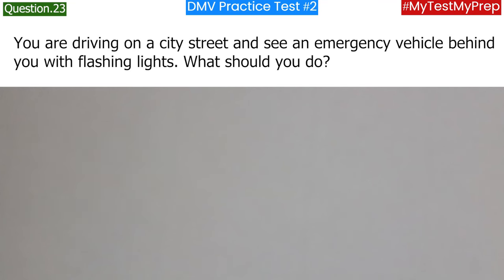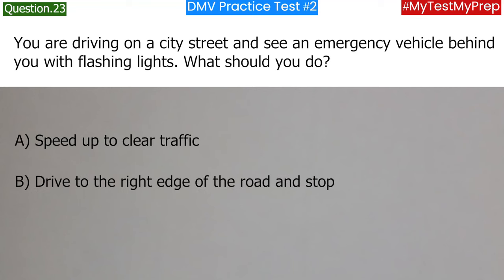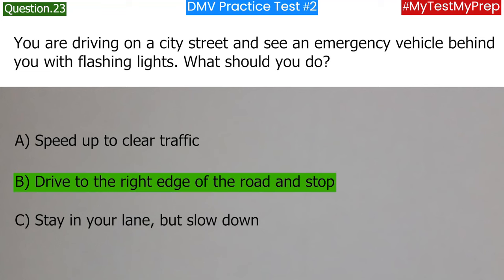You are driving on a city street and see an emergency vehicle behind you with flashing lights. What should you do? a. Speed up to clear traffic; b. Drive to the right edge of the road and stop; c. Stay in your lane, but slow down. Answer: b. Drive to the right edge of the road and stop.